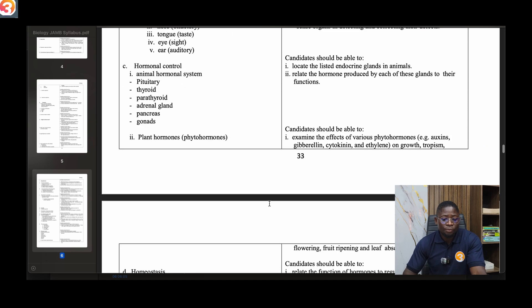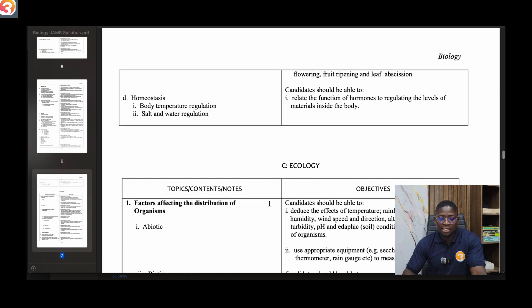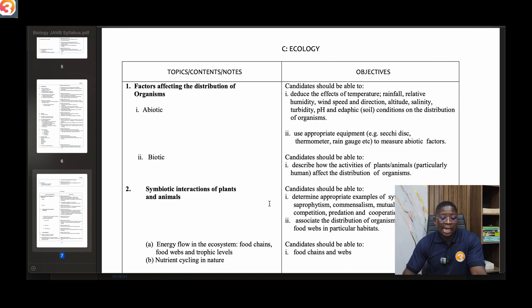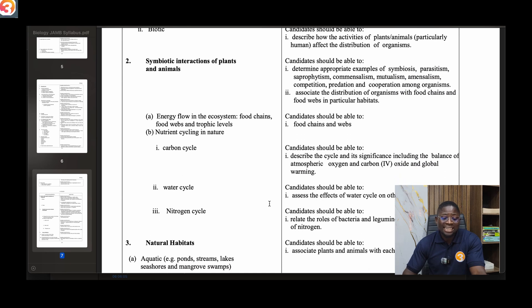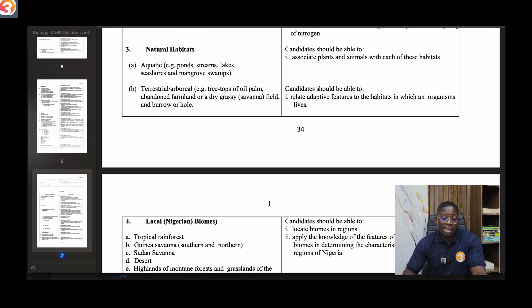This is part C - ecology. The topics under ecology: one is factors affecting the distribution of organisms, biotic and abiotic. Two, symbiotic interactions of plants and animals. Energy flow in the ecosystem - food chains, food webs and trophic levels based on nutrient cycling in nature. Carbon cycle, water cycle, nitrogen cycle. Then talk about natural habitat - aquatic, terrestrial, streams, lakes, seashores and mangrove swamps. Talk about terrestrial arboreal.